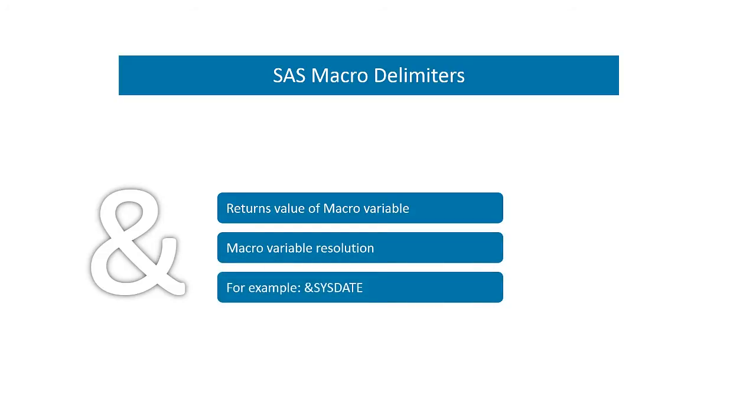There are two symbols that enable us to work with macro variables and macros. The ampersand and the percent sign. The ampersand character, when followed by a non-blank character, is an instruction to resolve a macro variable. The term resolving refers to the process of returning the value of a macro variable. So, for example, if we were to type ampersand sysdate in a SAS program, this would instruct SAS to return the value held in the macro variable sysdate. An instruction to resolve a macro variable within a program will therefore substitute its value at the precise point where it was referenced in the code.